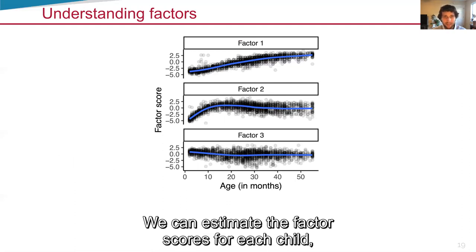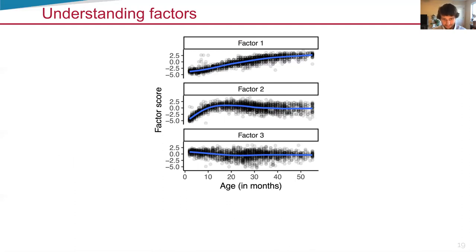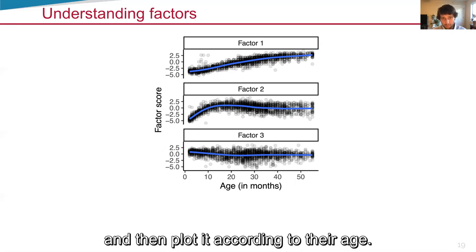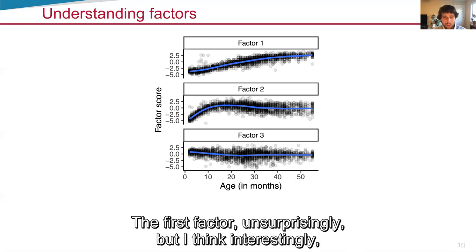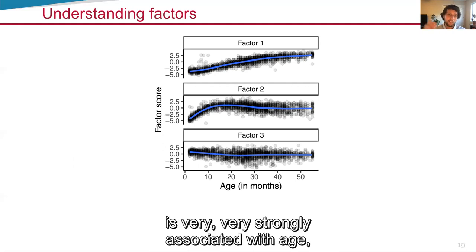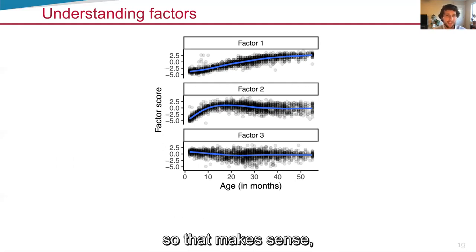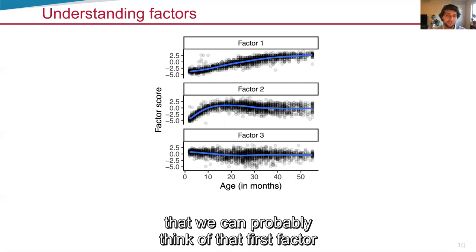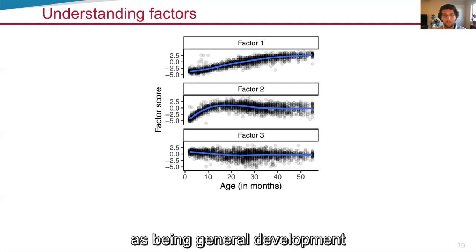We can estimate the factor scores for each child and then plot it according to their age. The first factor, unsurprisingly but I think interestingly, is very strongly associated with age. So that makes sense that we can probably think of that first factor as being some general development that is strongly associated with age.